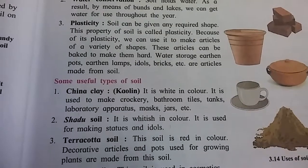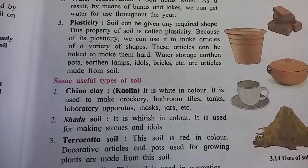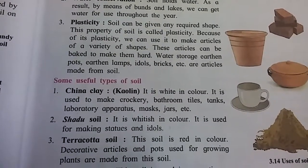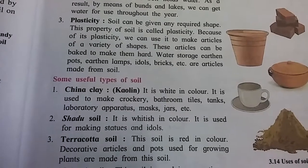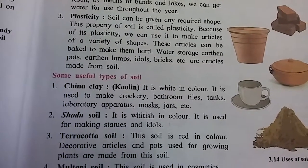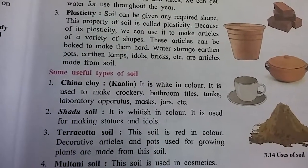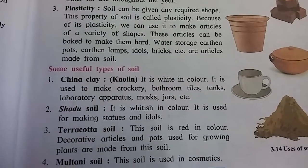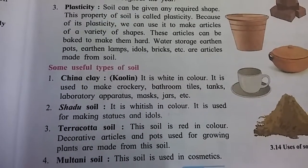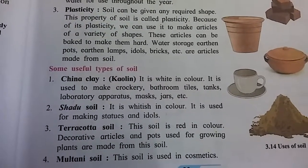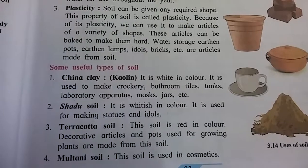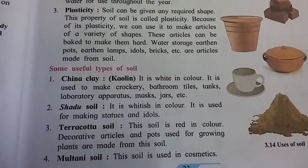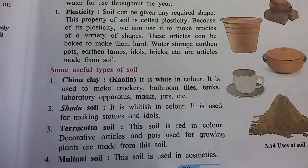Crockery, bathroom tiles, laboratory apparatus, and jars are all made from china clay. Second is shadow soil — it is whitish in color and is used for making statues and idols.